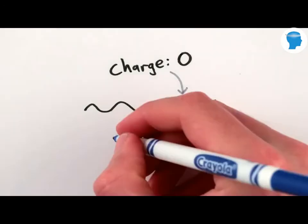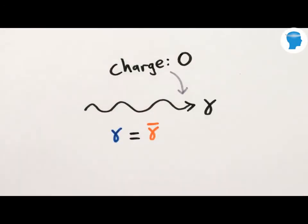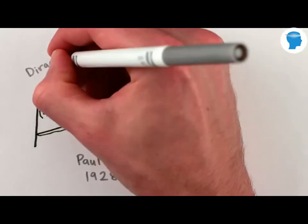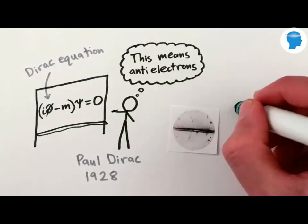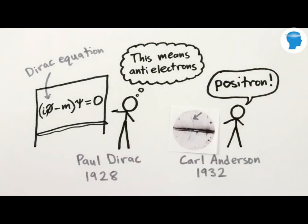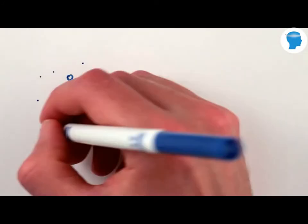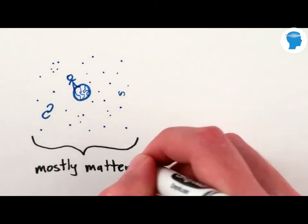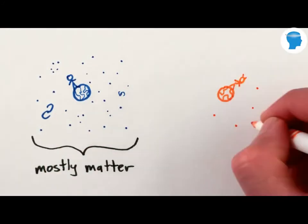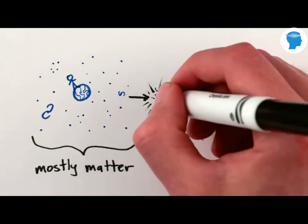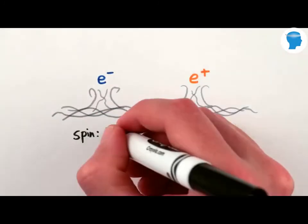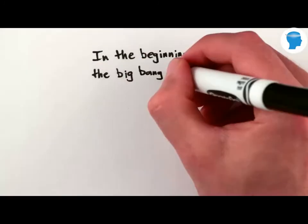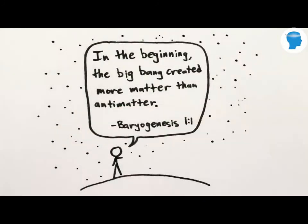Photons, incidentally, have zero charge and so are their own antiparticles, in the same way that zero is equal to negative zero. In fact, mathematics has always been closely tied to antimatter — the mathematics of relativistic quantum mechanics predicted the existence of antimatter for years before any had ever been discovered. The fact that there's so little antimatter in the universe is both obvious, because if it were around it would have destroyed us, a good thing, and a puzzling thing: if matter and antimatter are basically identical mirror images of one another, why did the Big Bang produce so much more matter than antimatter?